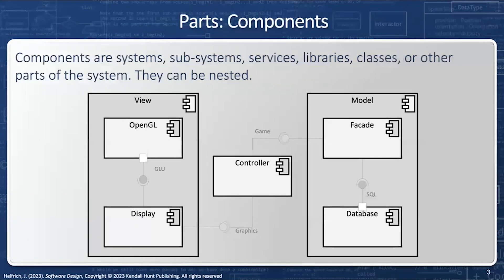First of all, we have the components. The components are systems, subsystems, services, libraries, classes, or even functions, and they can be nested. So in this case, I have a view component, I have a model component, and I have a controller component.